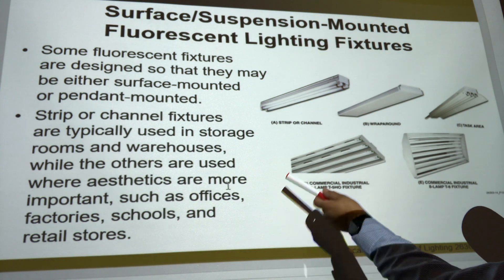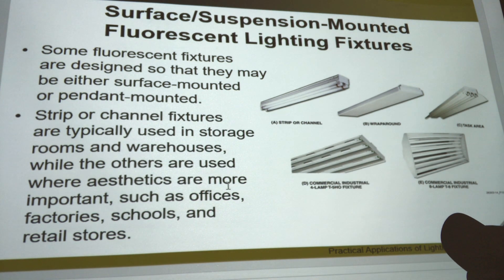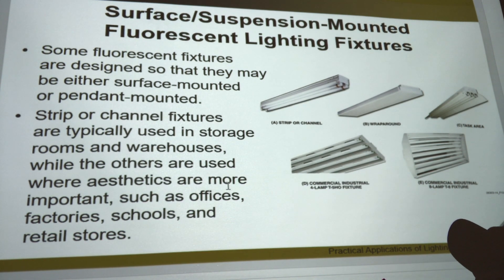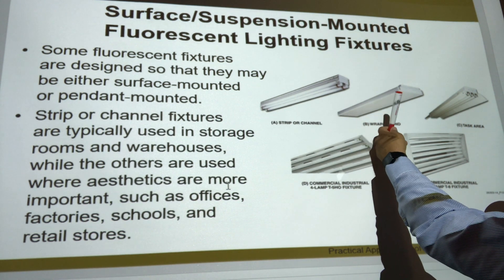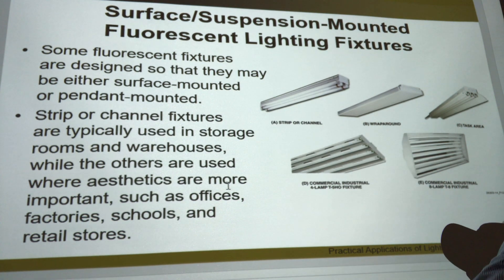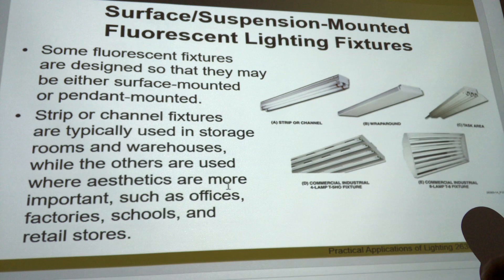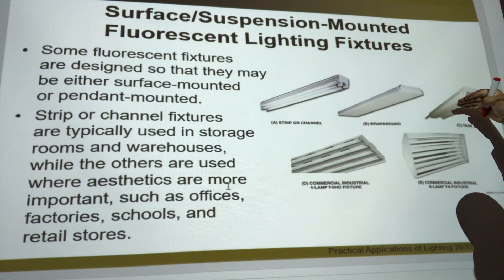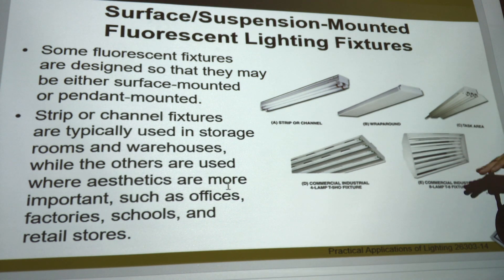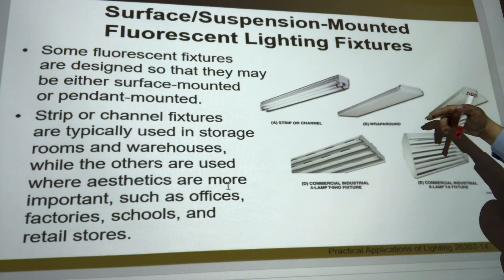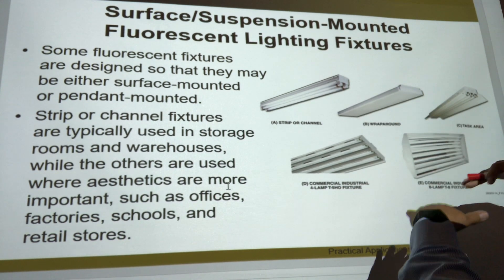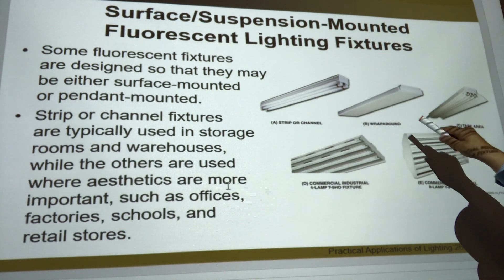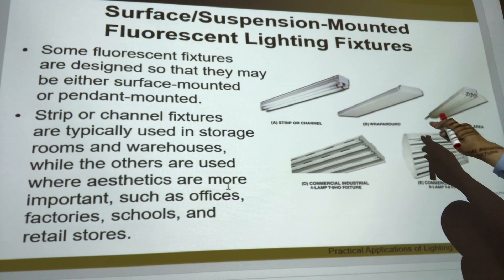Surface mount lights — you find these everywhere, usually in warehouses and back areas. They're inexpensive and easy to change. Wraparound fixtures — you used to find those a lot in kitchens. They spread out the light enough to be manageable and give a nice look. For task areas, this one has three bulbs here and two bulbs there — so one might be for a 12-foot ceiling and another for an 8-foot ceiling, good for a 10x10 or 10x20 room depending on how many foot candles you need.